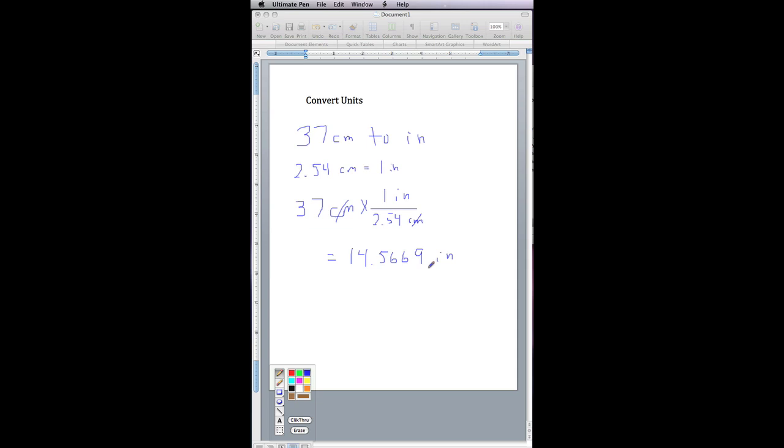That's really too many digits for our needs, so we can round that off somewhere convenient here. Since 37 centimeters had two significant digits, we can round our answer off to 15 inches.